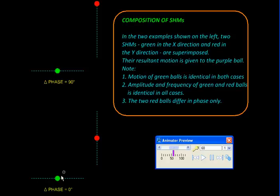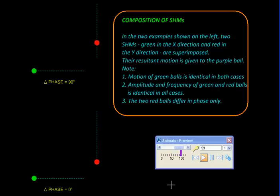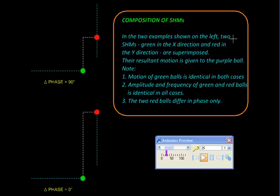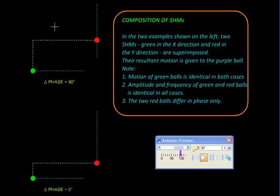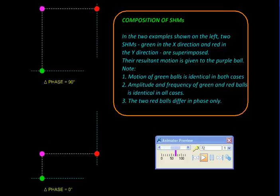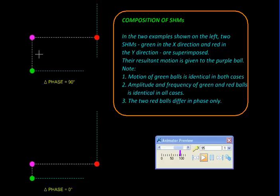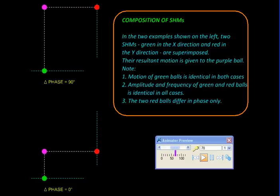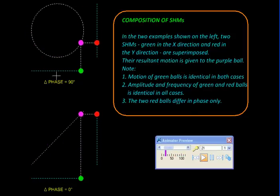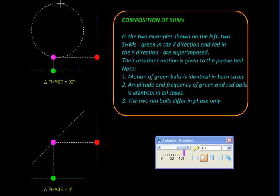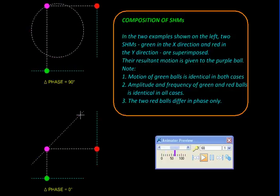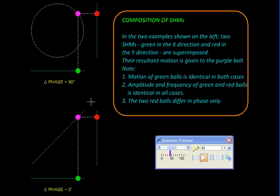Let's set them in motion — this is how they will look. Now, to compose these two SHMs, to combine them, we are going to project their positions. These are the projectors, and wherever these two projectors meet we are going to place another particle — this purple ball. What we are observing now is the resultant of these two SHMs, and we can trace the path of this resultant motion. The difference is really very striking: here we are getting a perfect circle, while here we are getting a straight line. That is the difference phase can make.